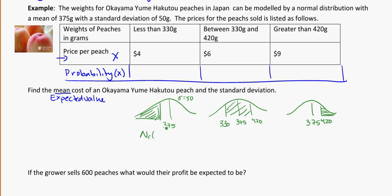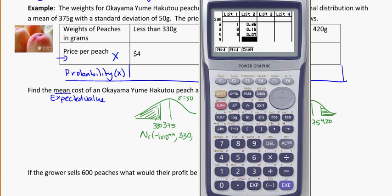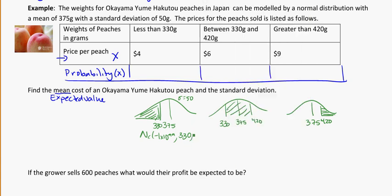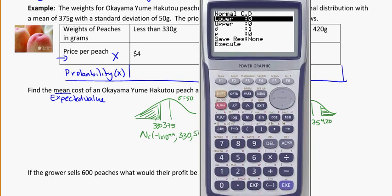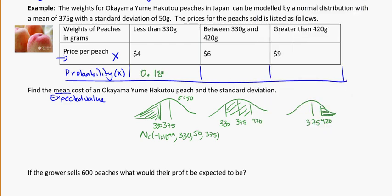So we can go into normal, and my lower bound on this one, for instance, would be minus 1 times 10 to the 99. The upper bound would be 330. And then we've got our mean and our standard deviation. I can never remember what order, so let's look here. Going back to distributions, normal, CD, sigma, and then mean. So my standard deviation is 50, and my mean is 375. So that's what we'll put into the calculator. Minus 1, E99, 330, 50, 375. And my probability there, 0.1841.